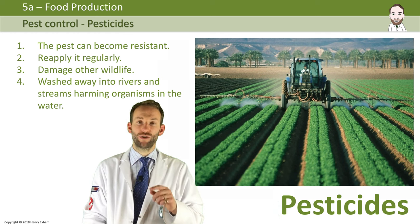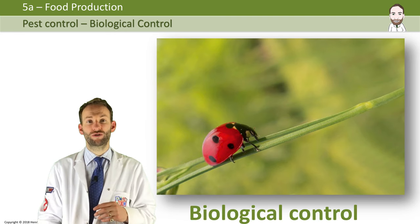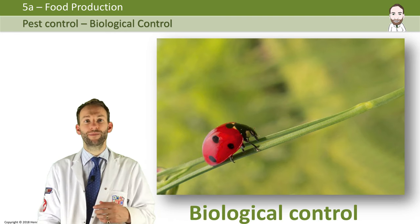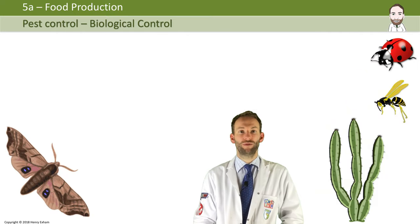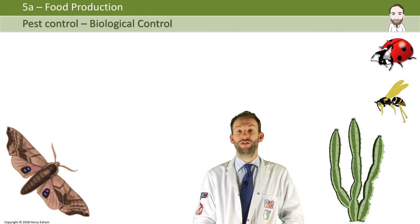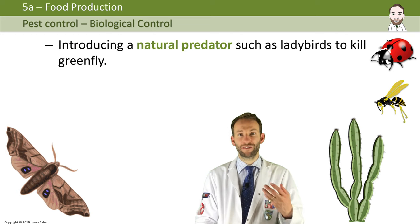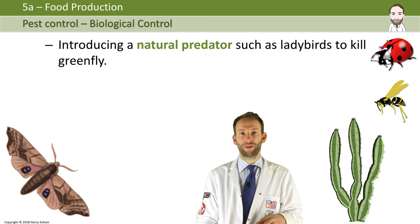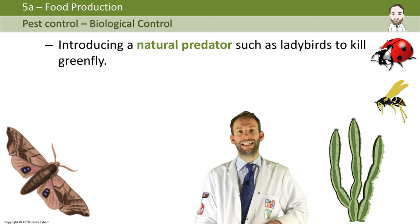Organic farmers cannot use pesticides. They may opt for something called biological control. Biological control is when another organism is introduced to control the pest rather than a chemical. For example, you might introduce a natural predator such as ladybirds which kill greenflies. You release lots of ladybirds onto your crop and the ladybirds will eat the greenfly, and you haven't had to use any chemicals.